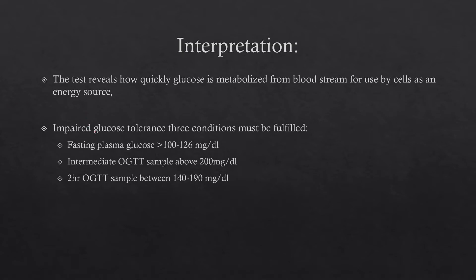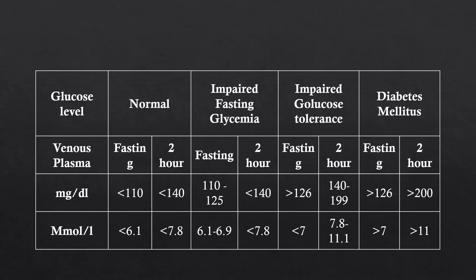A patient is said to have impaired glucose tolerance if three conditions are fulfilled: first, fasting blood plasma glucose levels are more than 100 to 126 mg per deciliter; second, intermediate OGTT samples are above 200 mg per deciliter; and third, the two-hour OGTT sample is between 140 to 199 mg per deciliter.